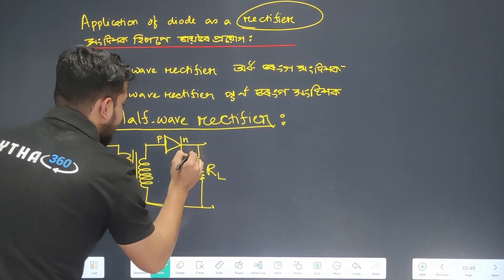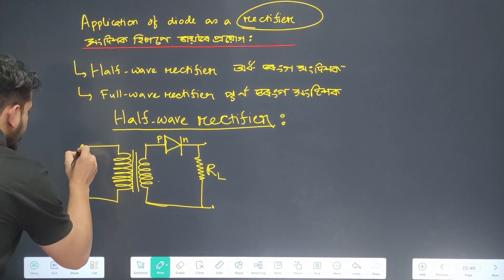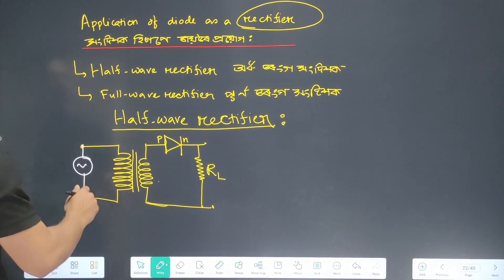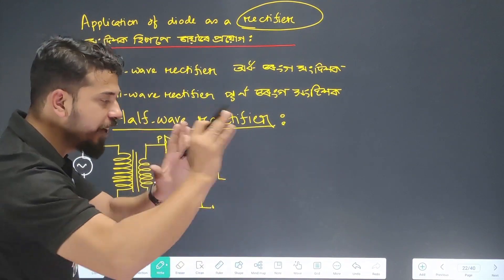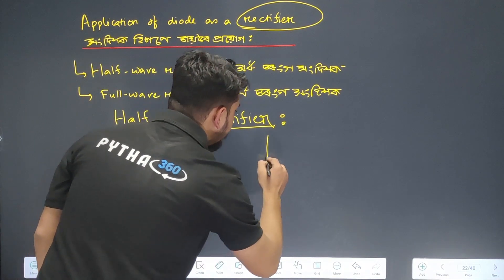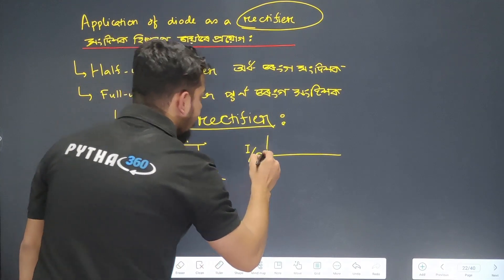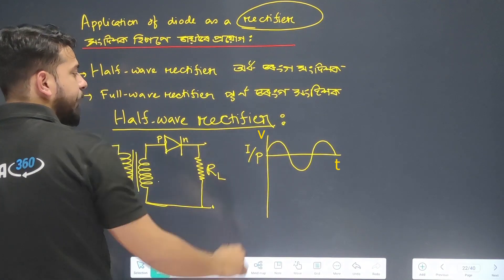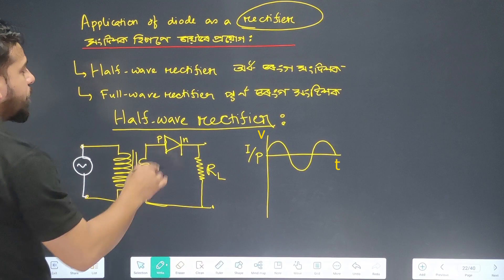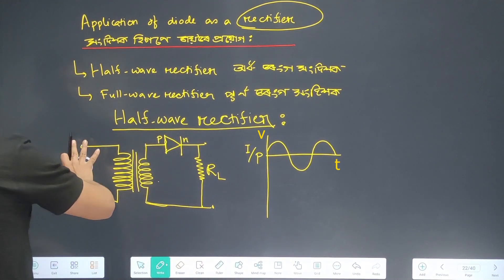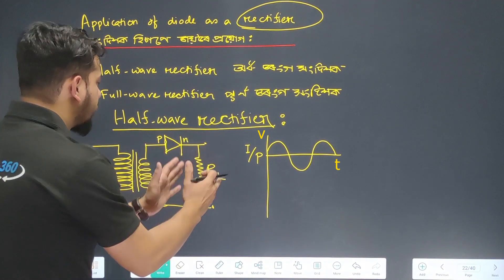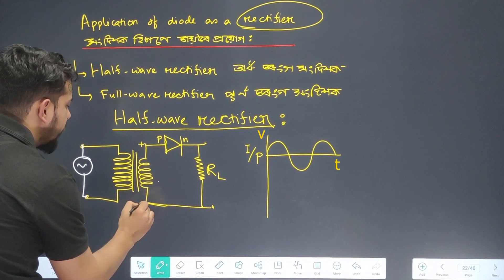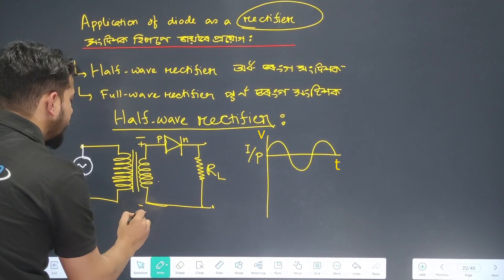The AC source is connected. The diode allows current to flow in a fixed direction. So the input waveform from the AC source is a sinusoidal wave — positive half cycle followed by negative half cycle. The transformer works on the principle of mutual induction, stepping down the voltage level. The AC input comes out of the secondary coil.